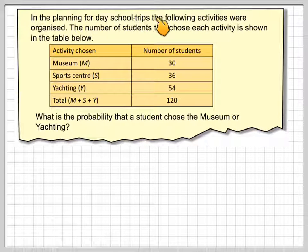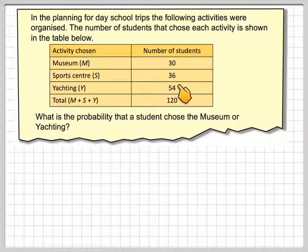In the planning for school trips, the following activities were organized. The number of students that chose each activity is shown in the table below: Museum (M), Sports center (S), and Yachting (Y). The total is 120, with 30 students choosing the museum, 36 the sports center, and 54 yachting. The most important thing is that a student can only choose one activity.